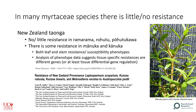We already know that in many myrtaceous species there is little or no resistance, and that includes in Rāmarama, Rahutu, and Pōhutukawa. There is some resistance in Mānuka and Kānuka but it's complicated. There are both stem and leaf resistances that are independent, and we now know — based on the genetic studies that David Chagné and colleagues have been doing — that those two resistances map to different chromosomes in the Mānuka genome, so it's quite a complicated system.